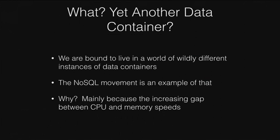So why do we have another data container? In my opinion, we are bound to live in a world of widely different instances of data containers. The NoSQL movement is an example of that — we have a wide range of different databases and data containers, even in Python. This is mainly because of the increasing gap between CPU and memory speeds, and if you understand this fact, you will understand why this is so important. For more details, you can see my article, 'Why Modern CPUs Are Starving and What You Can Do About It.'